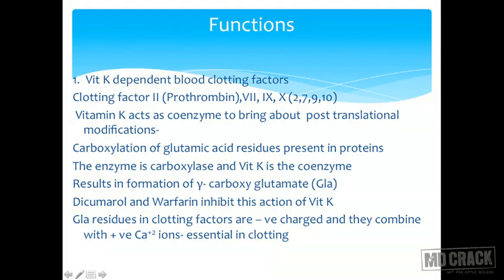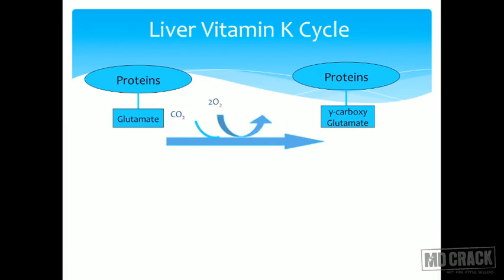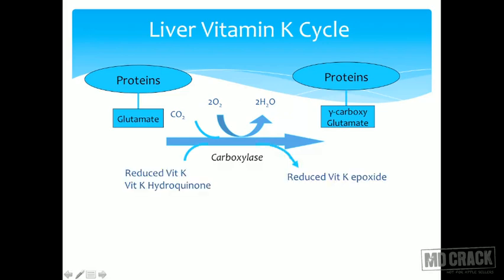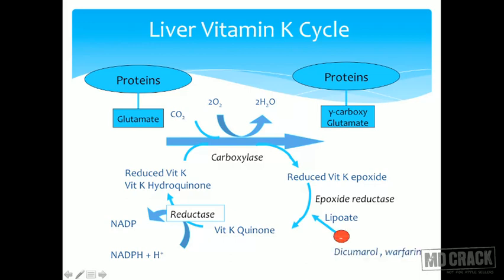In the liver Vitamin K cycle: proteins are carboxylated using oxygen, releasing 2H₂O, with carboxylase as the enzyme. Vitamin K hydroquinone (the reduced form) is converted to the epoxide form. The epoxide form is acted upon by epoxide reductase, which also requires lipoic acid, and is converted to vitamin K quinone. Vitamin K quinone is then reconverted back to hydroquinone by NADPH-dependent reductase. This is the Vitamin K cycle in the liver, where clotting factors are also synthesized. Epoxide reductase is inhibited by dicumerol and warfarin.